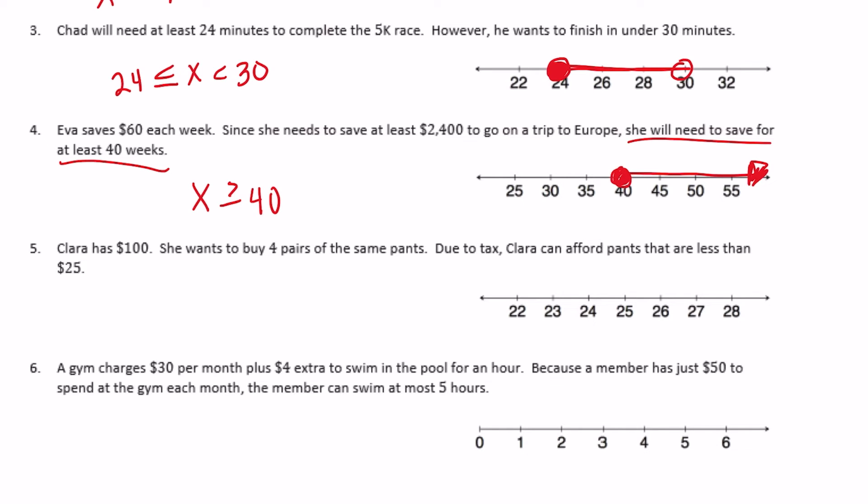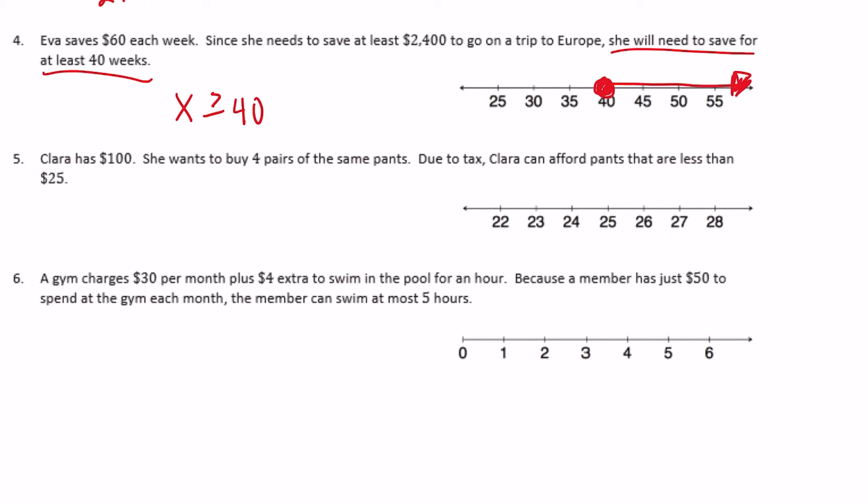Number five. Clara has $100. She wants to buy four pairs of the same pants. Due to tax, Clara can afford pants that are less than $25. So she wants to buy four pairs of the same pants, she can afford pants that are less than $25.